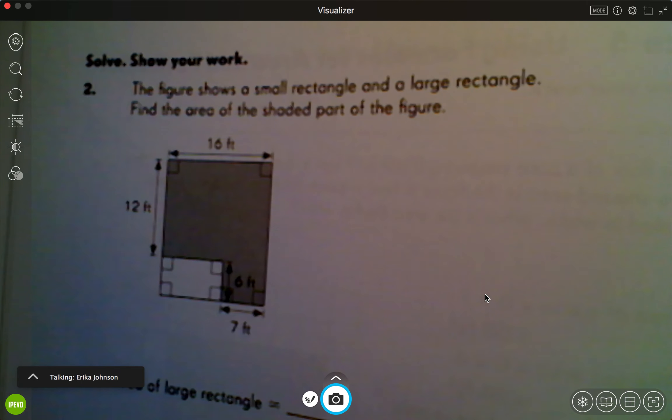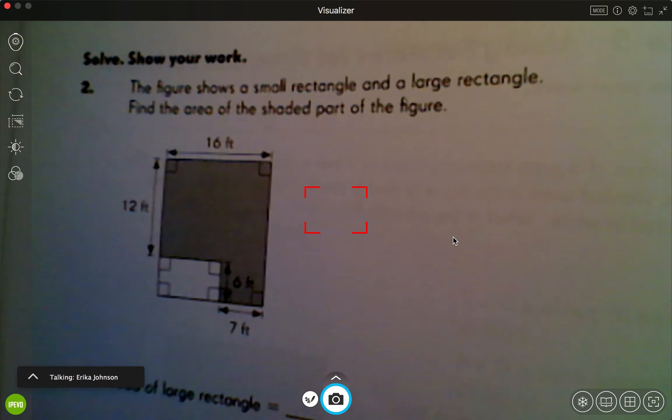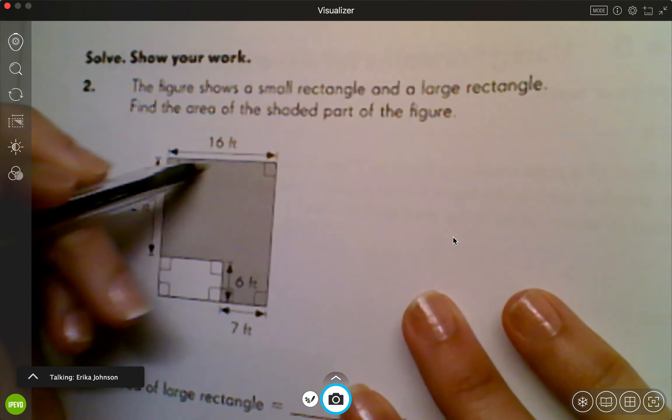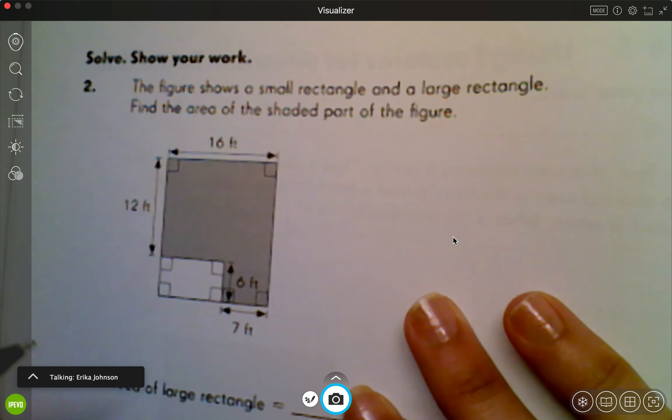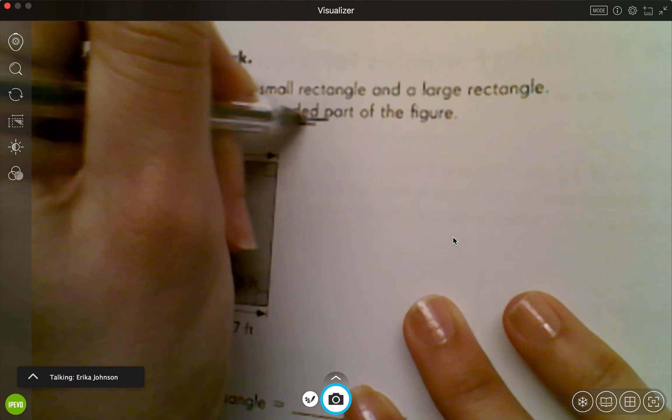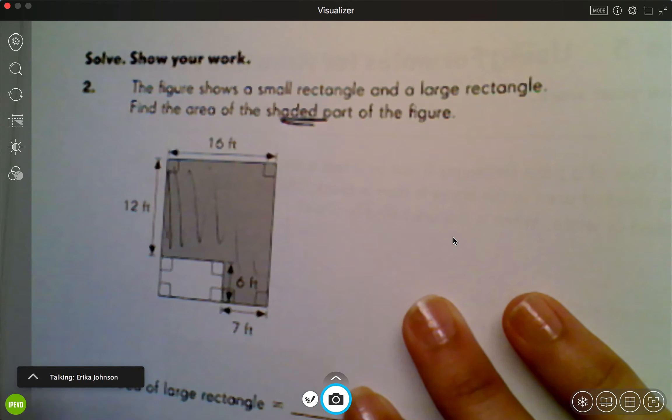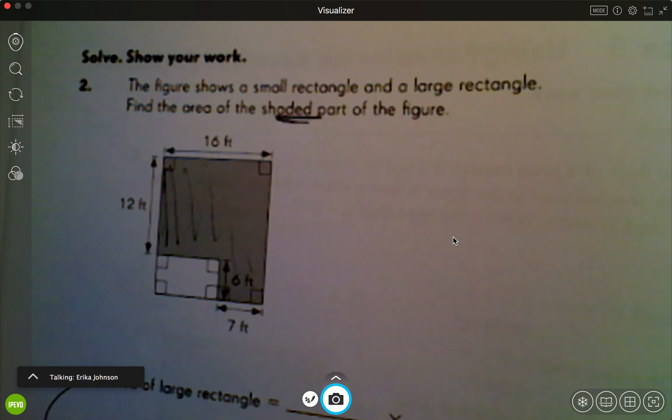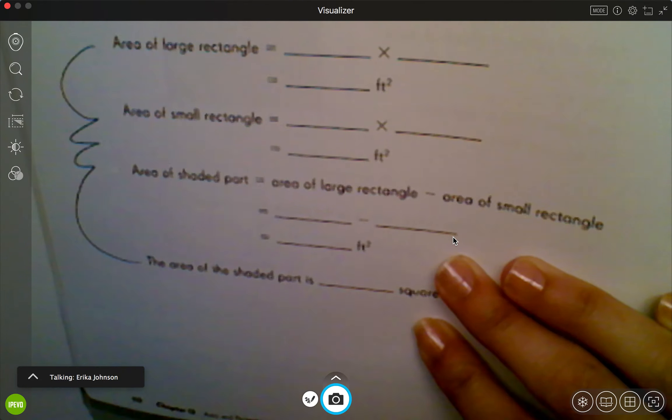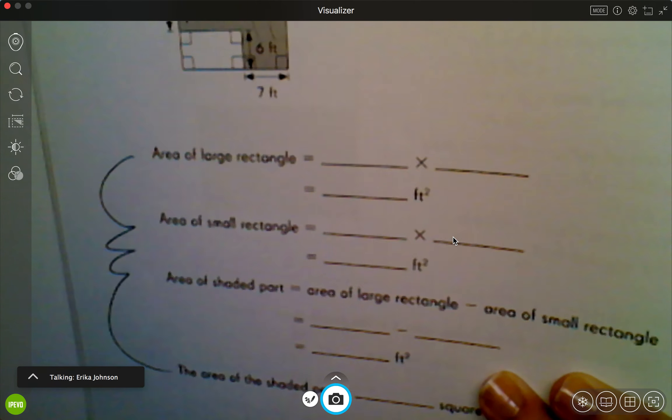So it says the figure shows a small rectangle and a large rectangle. I see there's like a big one and I see like a little small one right here. Find the area of the shaded part of the figure. So I want to know the area of like this gray part right here. What I try to do and what they're trying to get you to do right here is they're scaffolding it for you down at the bottom, and if you follow these steps you will solve the problem.